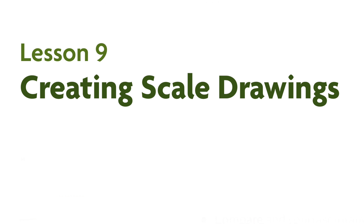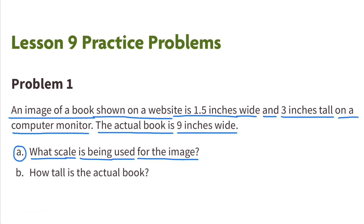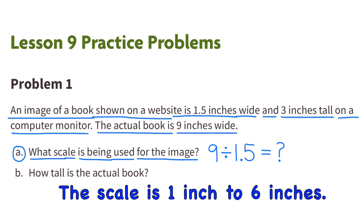7th grade unit 1 lesson 9, creating scale drawings. Number one: an image of a book shown on a website is 1 and 5 tenths inches wide and 3 inches tall on a computer monitor. The actual book is 9 inches wide. Part A: what scale is being used for the image? The actual book is 9 inches wide and it was only 1 and 5 tenths inches wide on the computer monitor, so 9 divided by 1.5 equals 6. The scale is 1 inch to 6 inches, or 1 to 6.